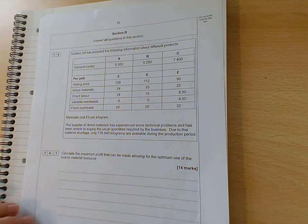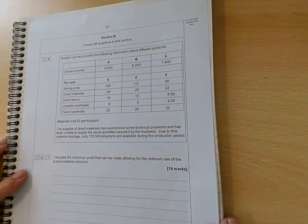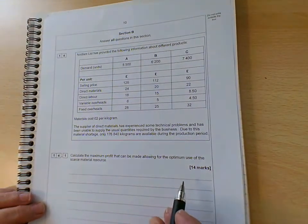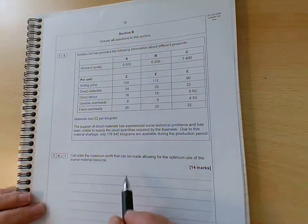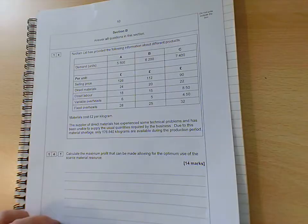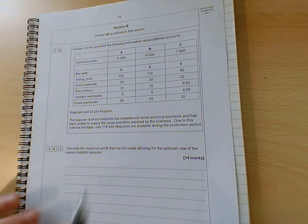So Nodlem Limited, this came from the 2019 paper two. I've put a link in the notes for this one so that you can find a copy of the question. Hopefully that's in focus, you'll be able to see what's going on. So this is optimum use of scarce resources or limiting factors. This is where something is in short supply and we can't make all the units of something, as much of everything as we'd like to.